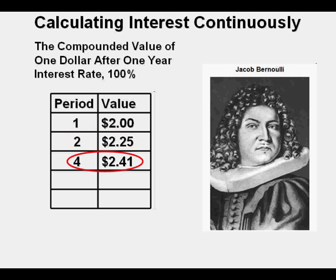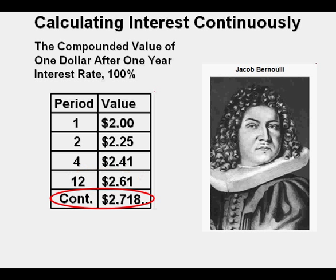Compounding quarterly, or 4 times per year, yields $1 times 1.25 to the 4th power, which equals 2.4414. Compounding monthly, or 12 times per year, yields $2.61. And finally, compounding continuously, Bernoulli discovered that the monetary value of $1 after one year is equal to the constant later called e for Euler.